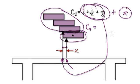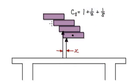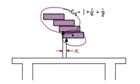So this number here — I'm asking you to find x, which is this distance here. It's really this: three blocks versus one block.